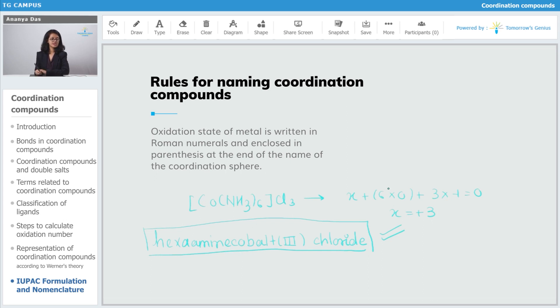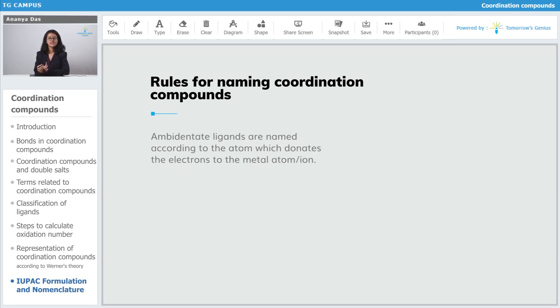Now, there are some miscellaneous things left. We will see that ambidentate ligands. If ambidentate ligands are present, then they are named according to the atom which donates the electrons to the metal.